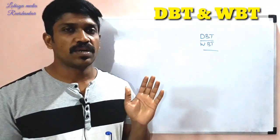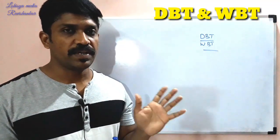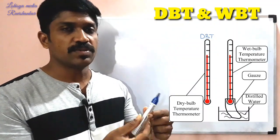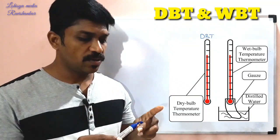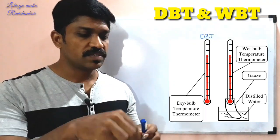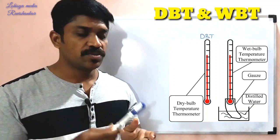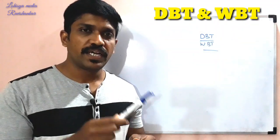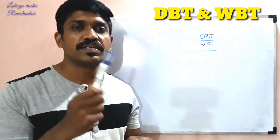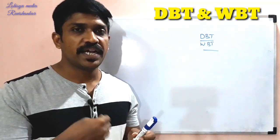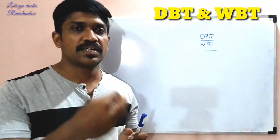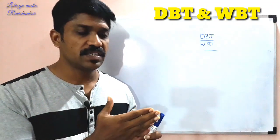But in WBT — the Wet Bulb Temperature — it is also measured with a thermometer. When we talk about the wet bulb, we will sling it in the environment. We will try to evaporate the water. Then some heat will go into the evaporation.